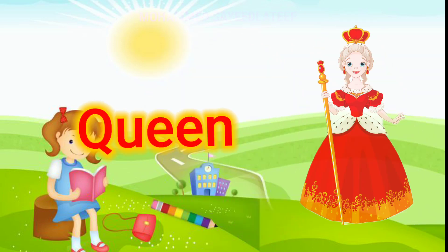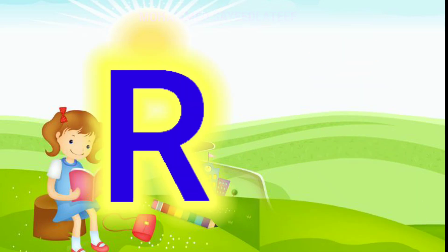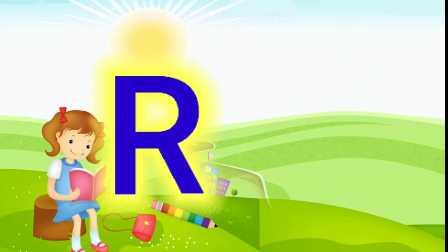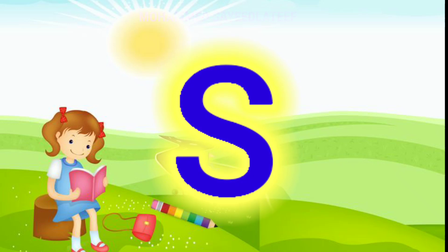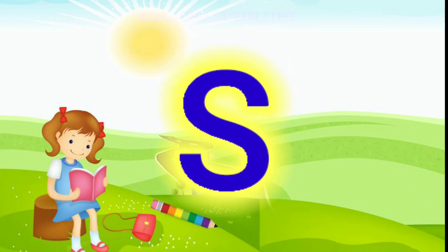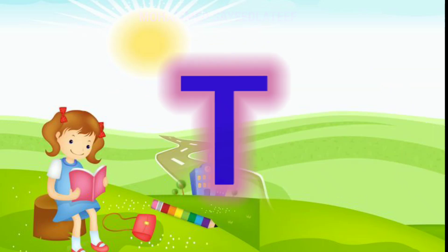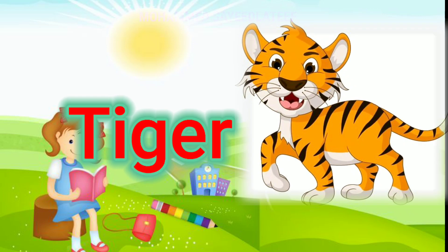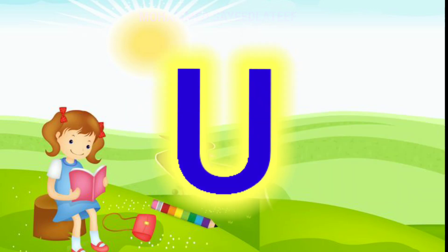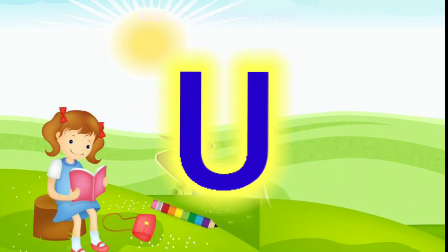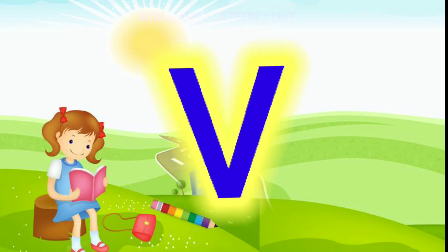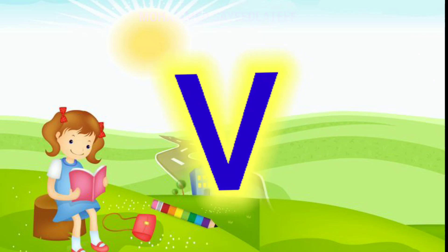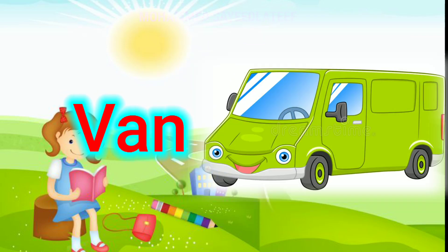Q for a queen, R for rabbit, S for sheep, T for tiger, U for umbrella.